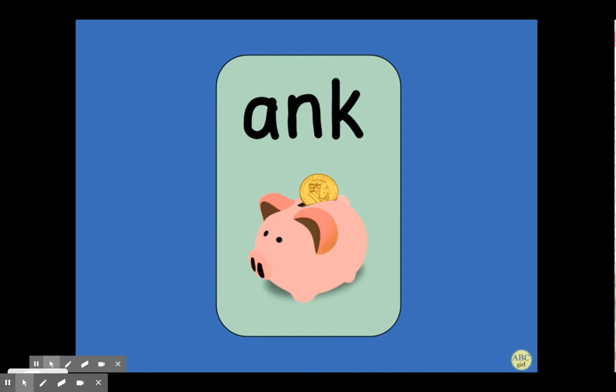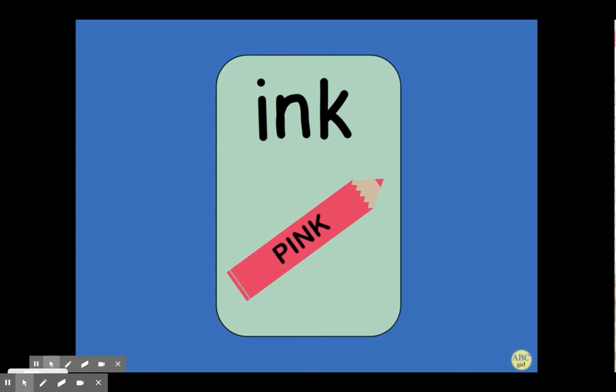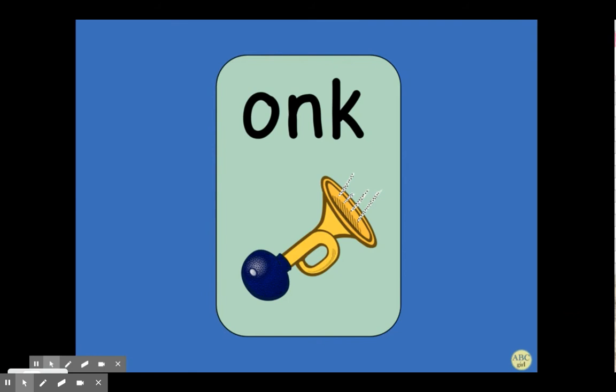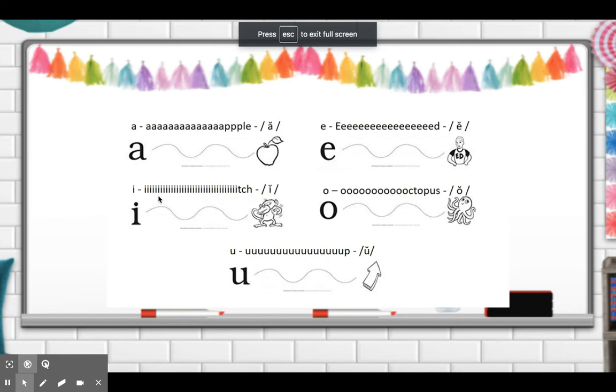ANK, bank, /ank/. INK, pink, /ink/. ONK, honk, /onk/. UNK, junk, /unk/. Now let's pause the video and stretch all our vowel sounds out.